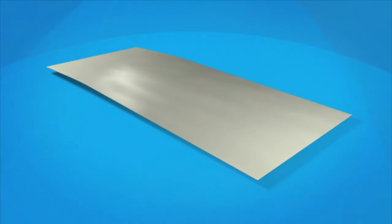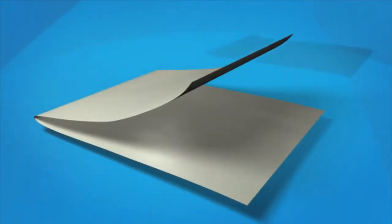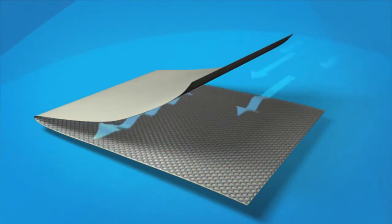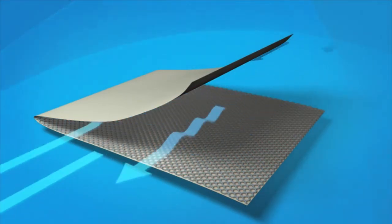The membrane flat sheet is combined with a sheet of feed channel spacer. This provides turbulence and creates space between the membrane sheets for the feed water.